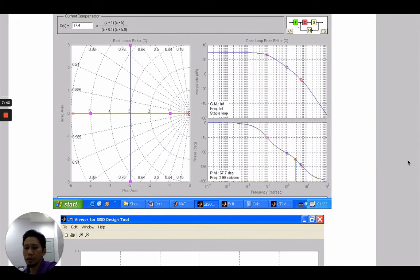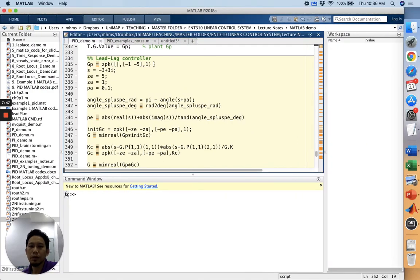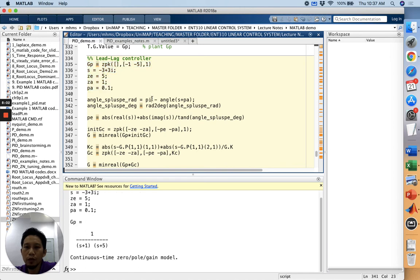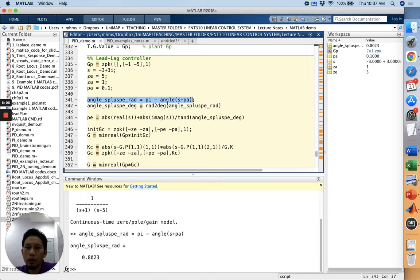Let's demonstrate our example using MATLAB. We have our GP here, and we have decided the ZE value, ZA, and PA. We can run it and then we find the angle for PE using s+PE and s+PA.